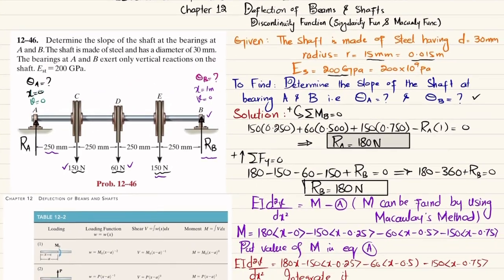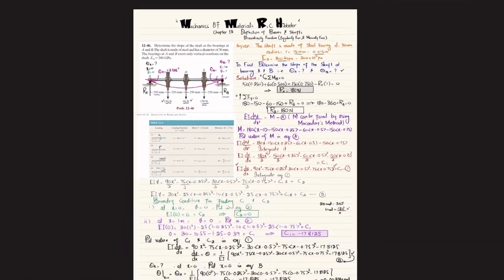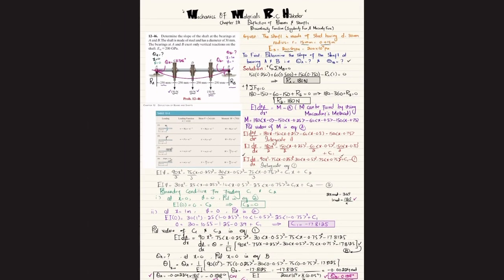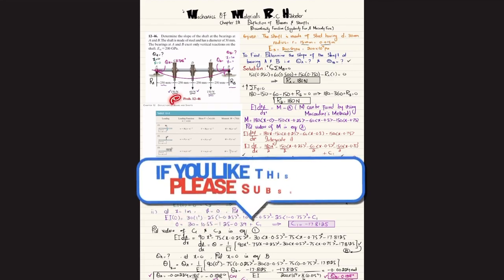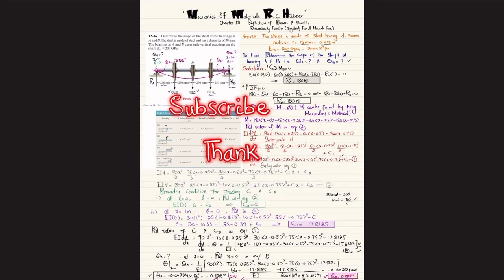In summary: θ_A = −0.128° (clockwise) and θ_B = +0.128° (counterclockwise). That was all about problem 12-46. I hope you enjoyed this video and learned from it. If you are new to my channel, please subscribe and press the bell icon for notifications. If you have any questions, ask in the comment section. Thank you for watching.